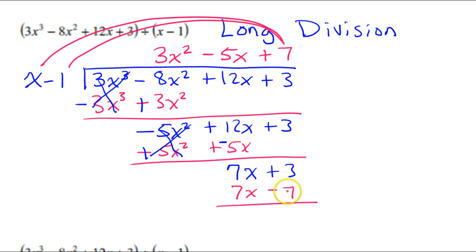And then, of course, you subtract this by changing the signs. So this will become negative, and this will become positive. So these cancel out, and this makes 10. So we've reached the end. We've already gotten to the constant. So that means this 10 is the remainder.